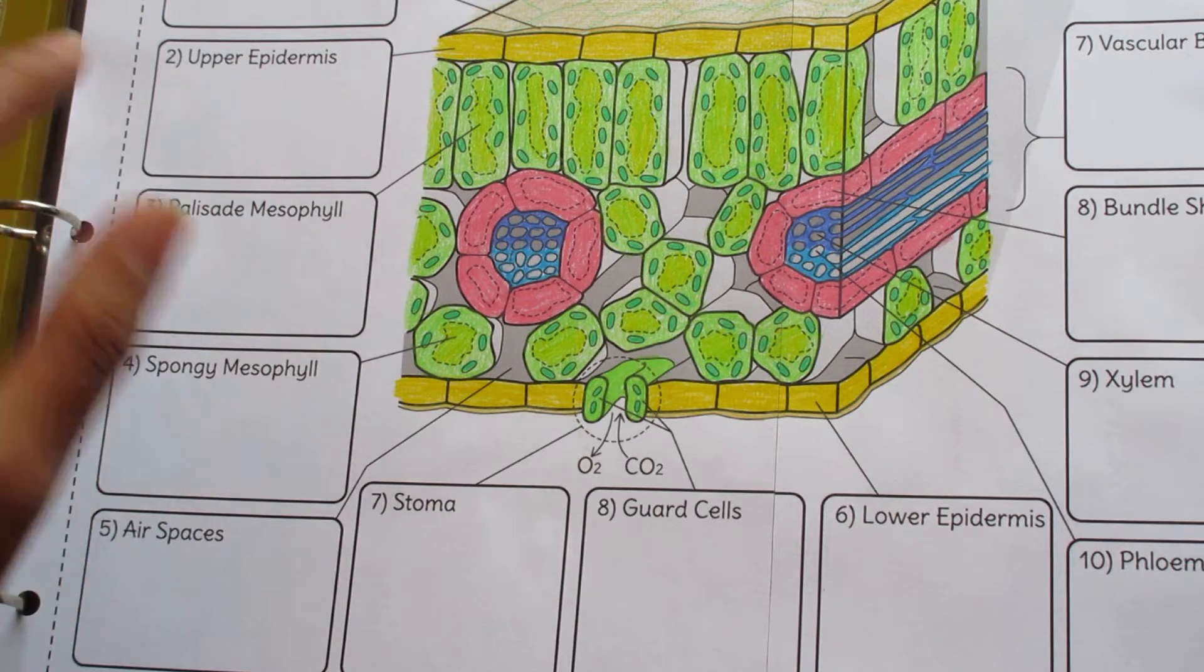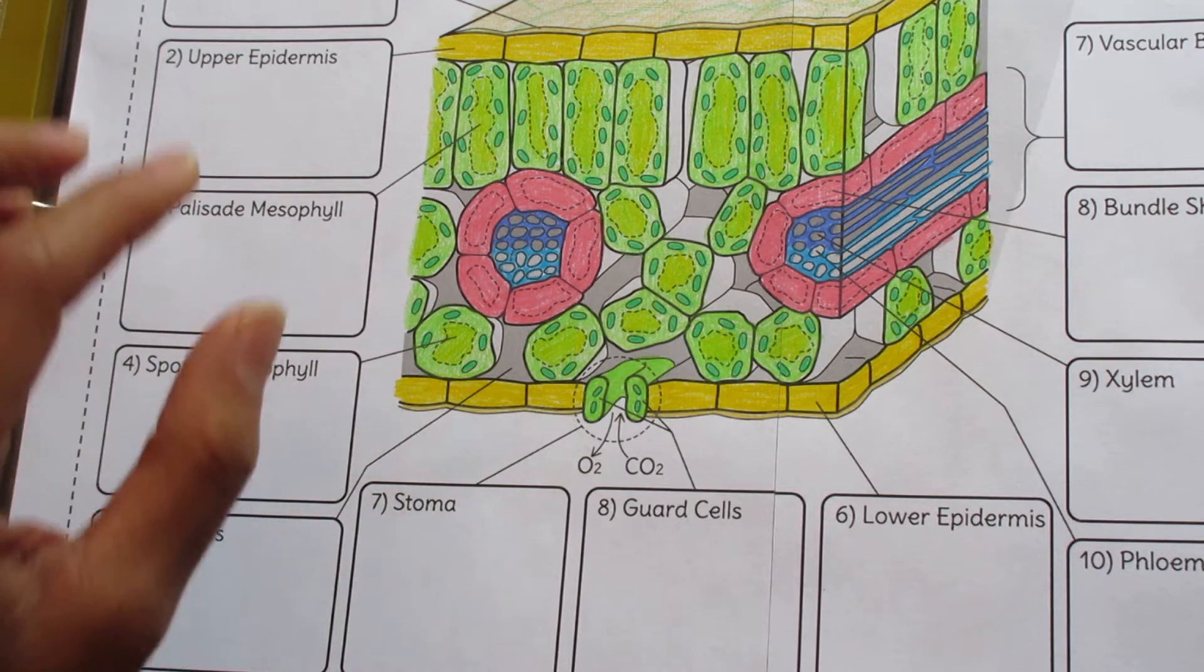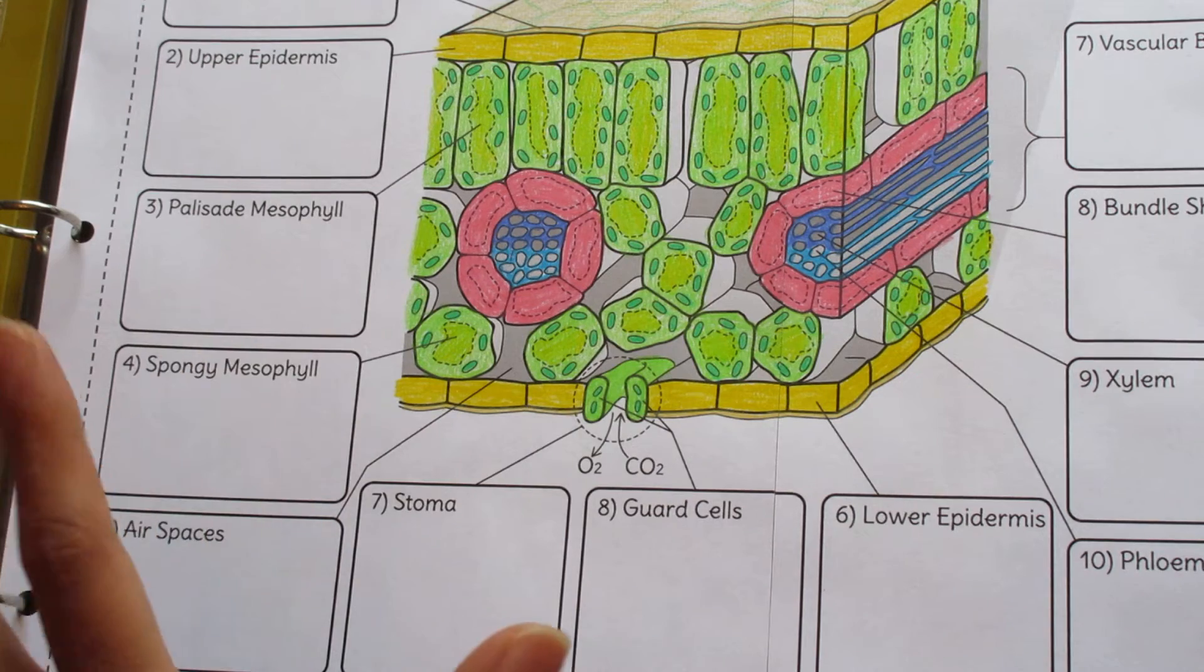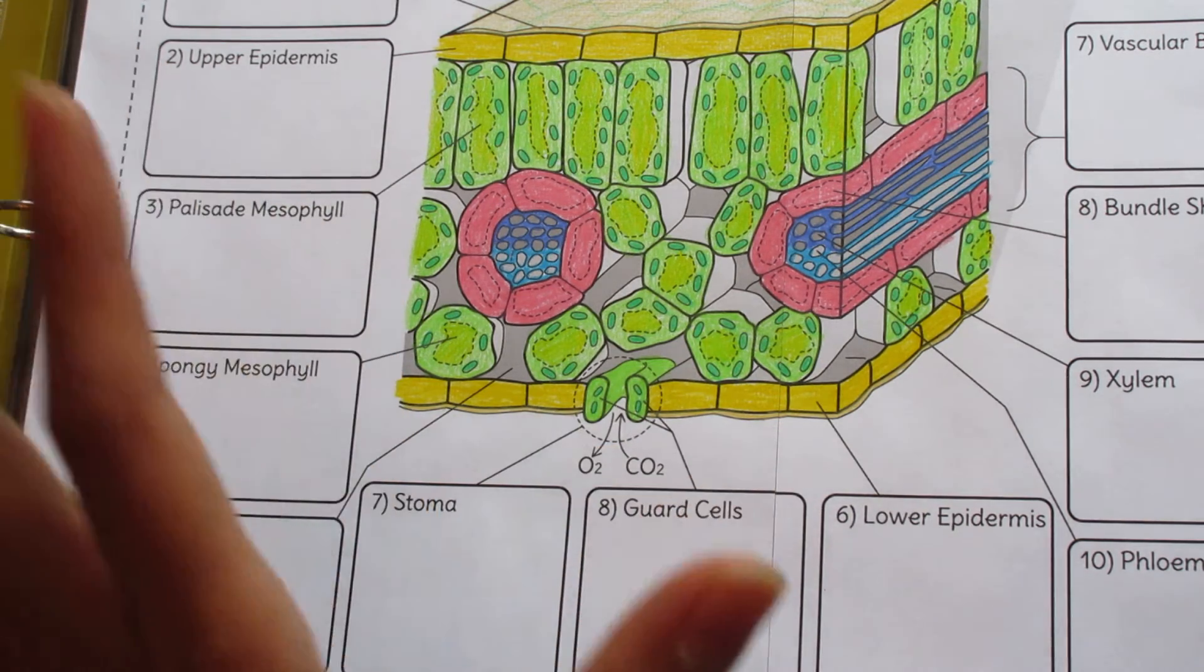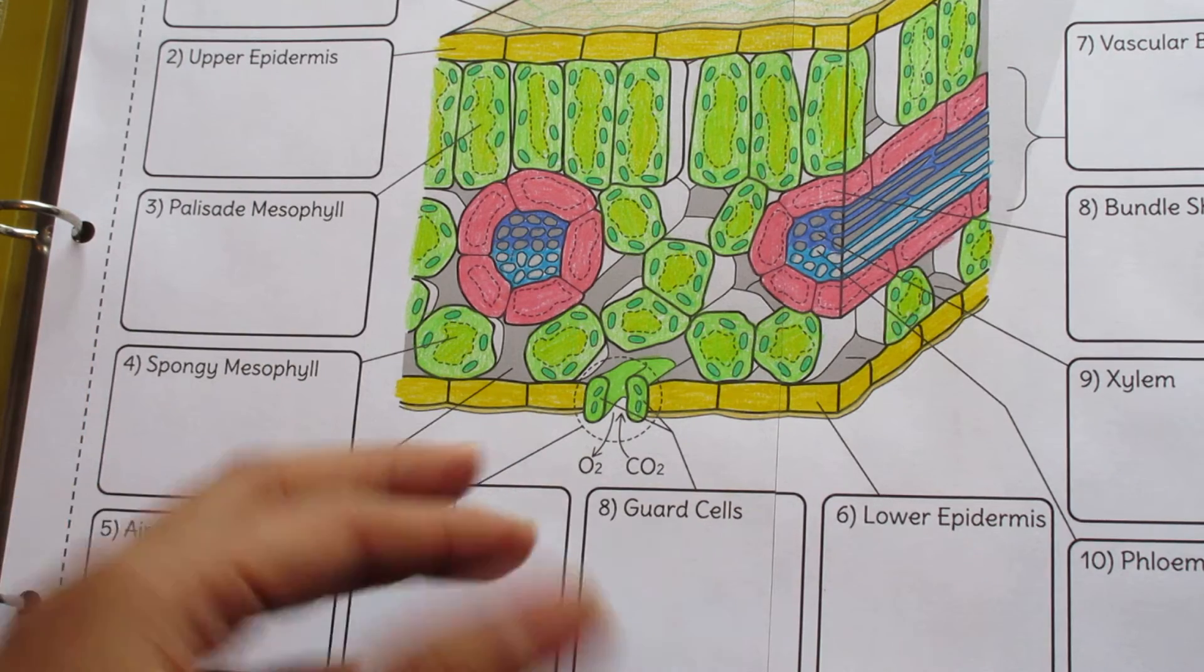Number two, the upper epidermis. Number three, the palisade mesophyll, et cetera. It allows you to go step-by-step so that students can always find their place and they'll never get lost and they'll know what's coming up next.